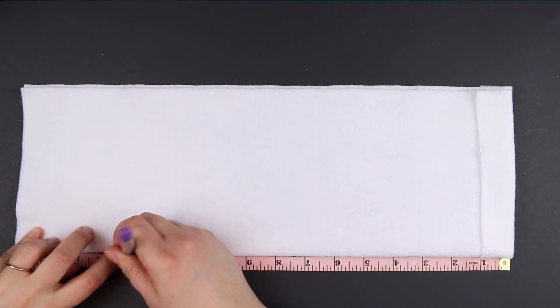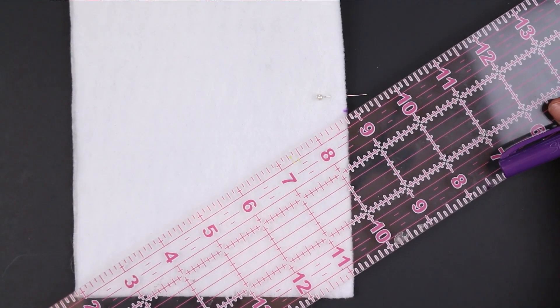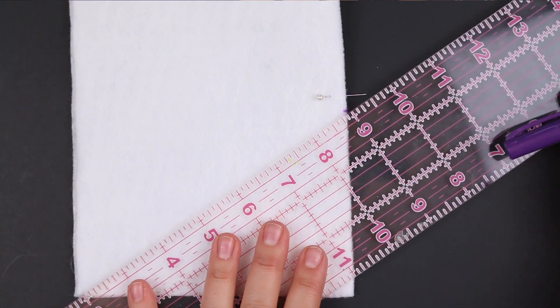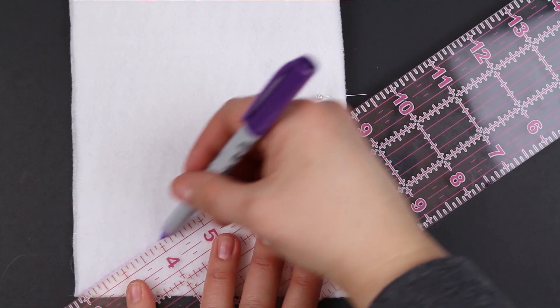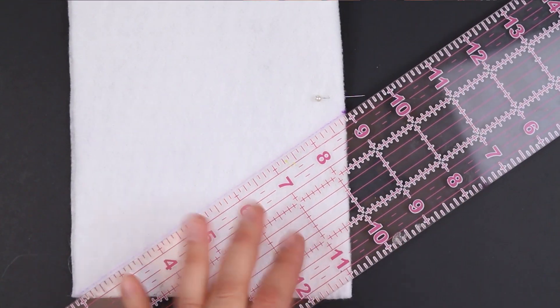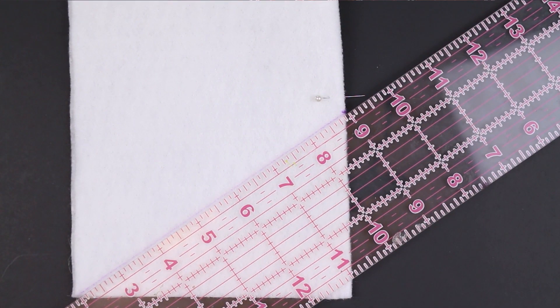You just need to make sure you measure 13 inches from the top of the banner or 4 inches from the bottom and make a mark. Then using a straight edge, draw a line from that mark to the outer corner of the banner, the outer corner of the piece of felt.